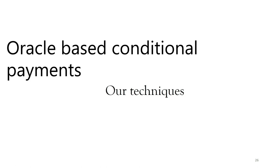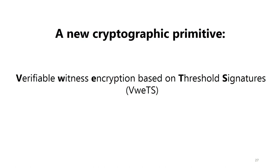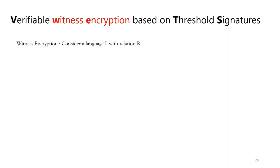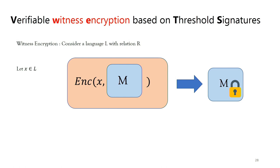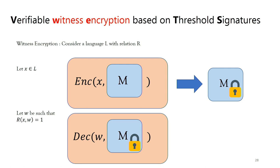To achieve this protocol we introduce a new cryptographic primitive called verifiable witness encryption based on threshold signatures. In witness encryption, consider a language L with a corresponding relation R. Given a statement in this language, you can encrypt a message M and get a ciphertext. To decrypt, you need a witness that satisfies the relation corresponding to the statement. As an example: the statement is a verification key and a message, and the witness is a signature on that message verifiable with the verification key.